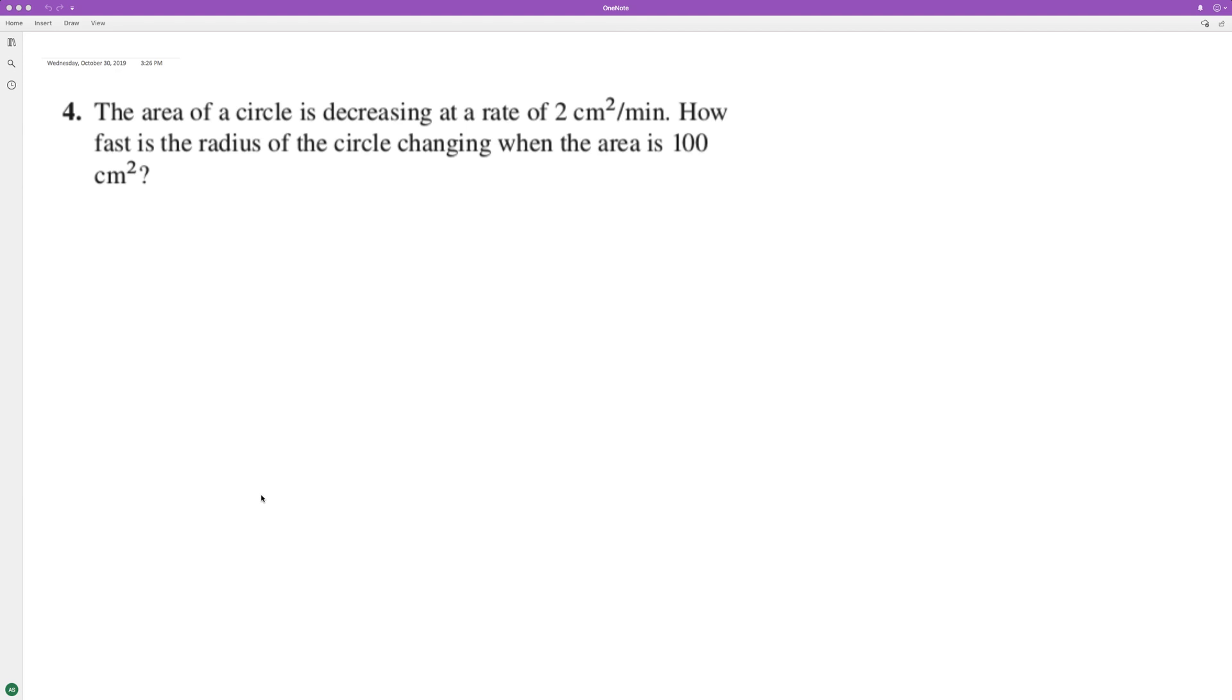The area of a circle is decreasing at a rate of 2 centimeters squared per minute. How fast is the radius of the circle changing when the area is 100 centimeters squared?